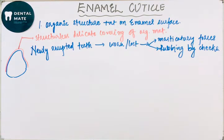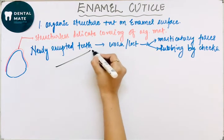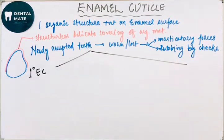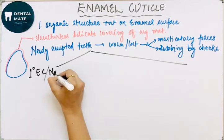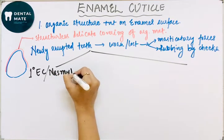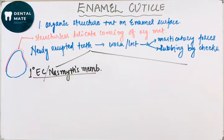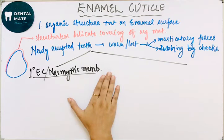Enamel cuticle is of two types: the primary enamel cuticle and the secondary enamel cuticle. The primary enamel cuticle is also known as Nasmyth's membrane.